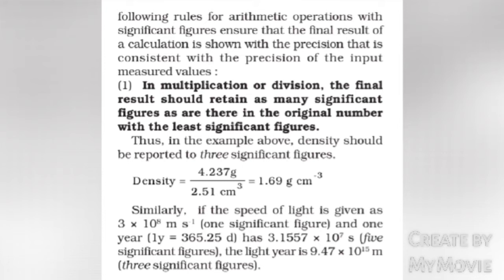Rule 1: In multiplication or division, the final result should retain as many significant figures as there are in the original number with the least significant figures. Thus, density should be reported to three significant figures: density equals 4.237 g divided by 2.51 cm³, which equals 1.69 g per cm³. Similarly, if the speed of light is given as 3 × 10^8 m/s (one significant figure) and one year has 3.1557 × 10^7 seconds (five significant figures).